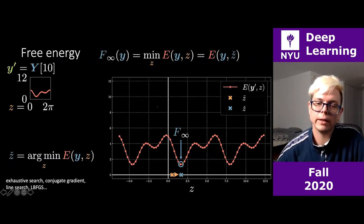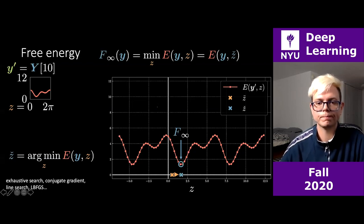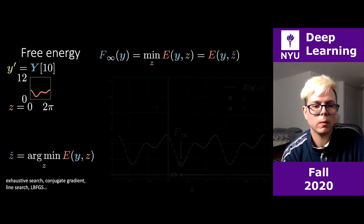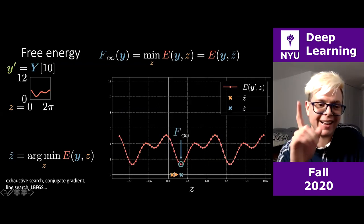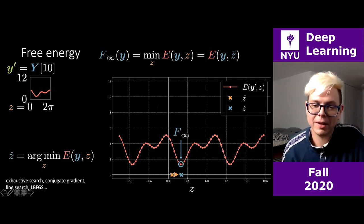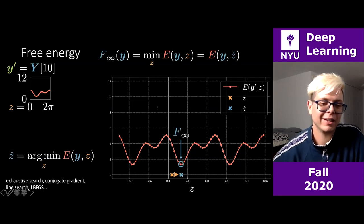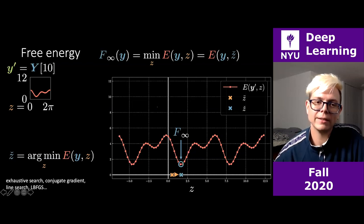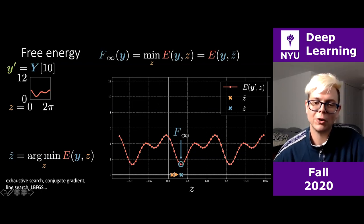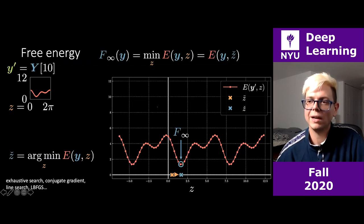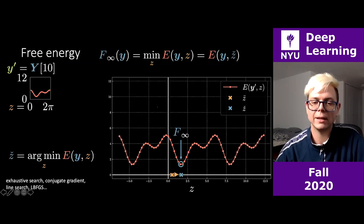The initialization can affect which minimum the algorithm converges to — L-BFGS can find the wrong minimum. However, the free energy is defined as the global minimum of E. Given z-check, the free energy F_∞(y) = E(y, z-check). For e10, we initialize z-tilde at some value (orange), run gradient-based minimization, and arrive at z-check (blue), which is cold/low. At that location we reach the minimum of this energy — that is the free energy.